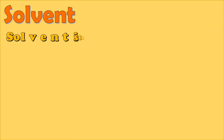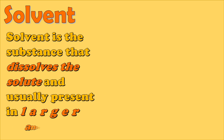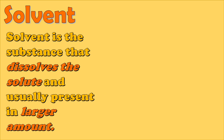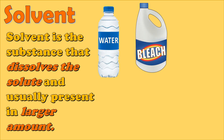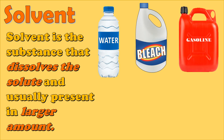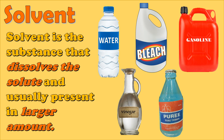Solvent is the substance that dissolves the solute and is usually present in a larger amount. For example, water. Water is considered the universal solvent because it can dissolve so many solutes. But remember, not all solutes can be dissolved by water. Some other examples of solvent are bleach, gasoline, vinegar, paint thinner, and acetone.